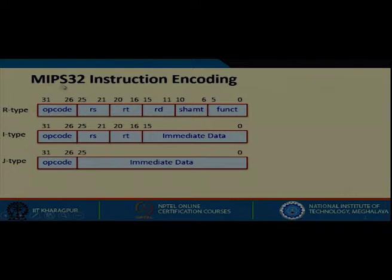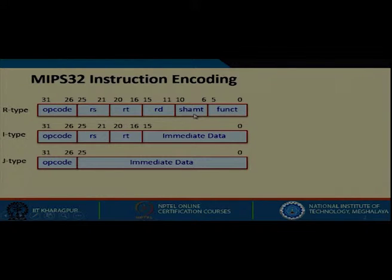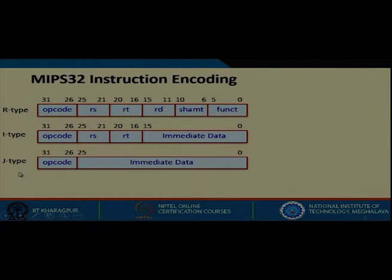We have already discussed MIPS 32 instruction encoding in week 2 lectures. We have R-type instructions, I-type instructions, and J-type instructions. In the R-type instruction, we have an opcode field, three register fields — two source registers and one destination register — a shift amount value, and an opcode extension function field. In I-type immediate instructions, we have an opcode, two registers, and a 16-bit immediate value. In J-type instructions, we have an opcode and a 26-bit immediate value.